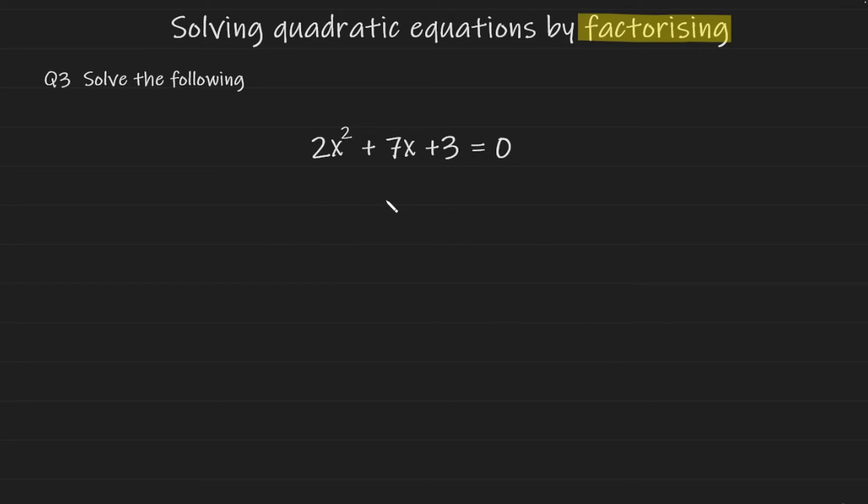Now let's take a look at our final example. Here we have a quadratic trinomial where the coefficient of x squared is greater than 1. So the number in front of x squared is larger than 1 and in this case it's 2. How to solve this by factorizing is to factorize as you normally would. So it's going to be two brackets which is equal to 0.